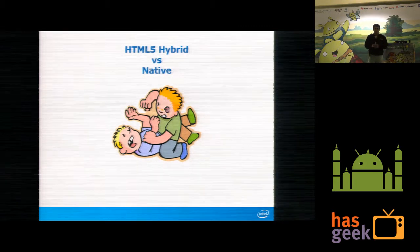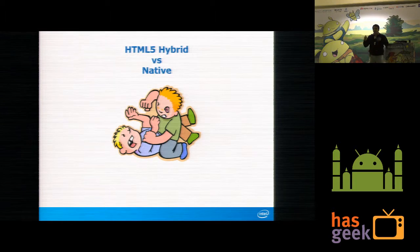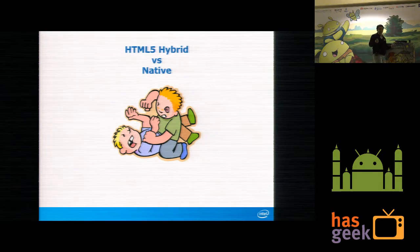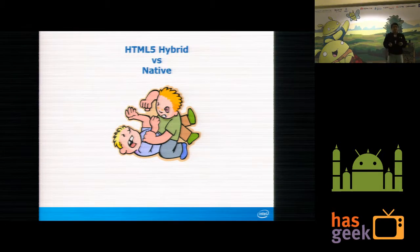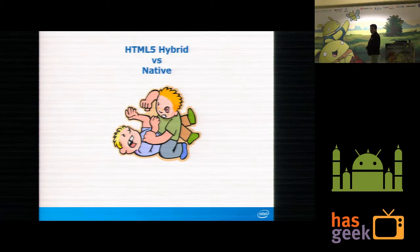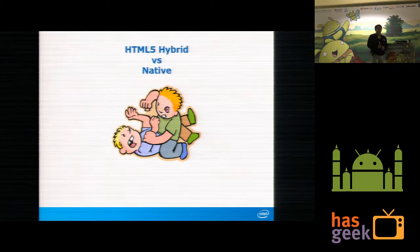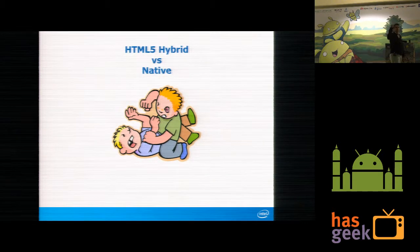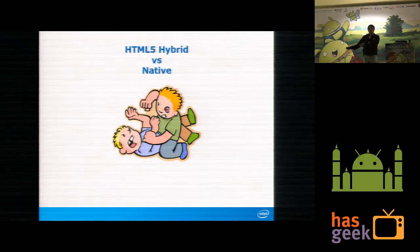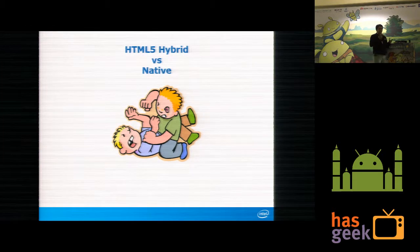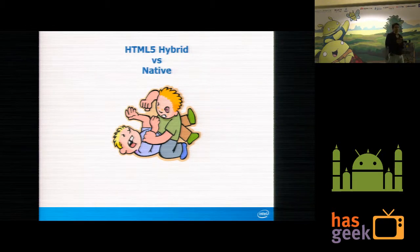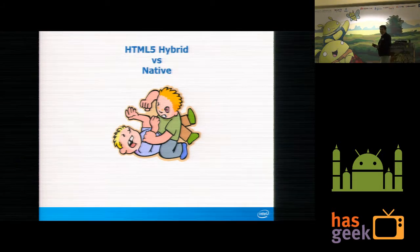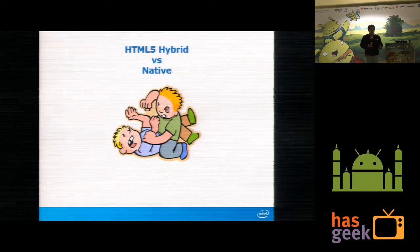Assume there is a doctor. You go to him, say you have a bad headache, and he gives you Saridon. You go home and you're cured. Next day you get a stomach ache. You go to the same doctor, and he says take Saridon. Nothing happens. Again maybe a cold — same Saridon. For every disease there are different treatments that you need to give. The same thing holds in technology also.